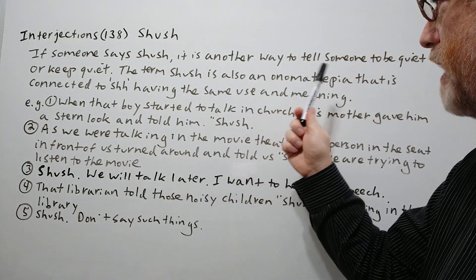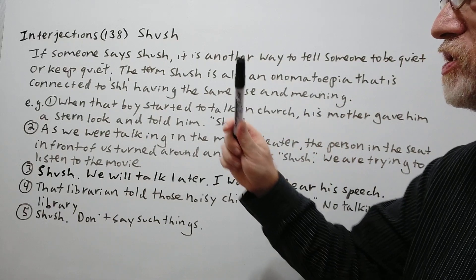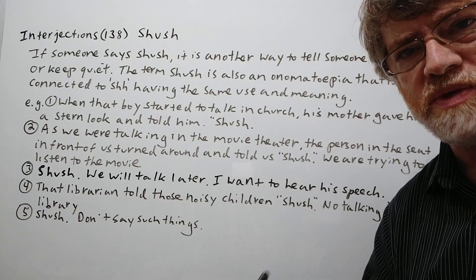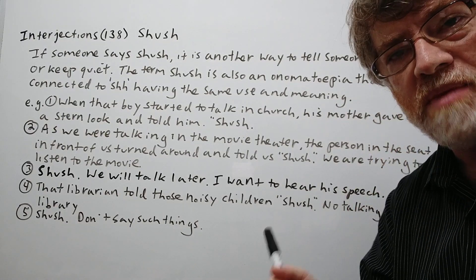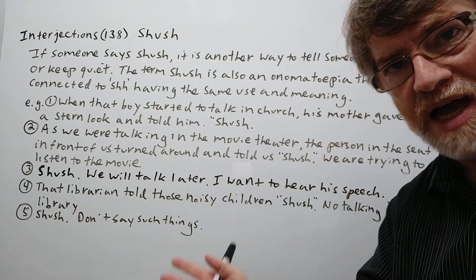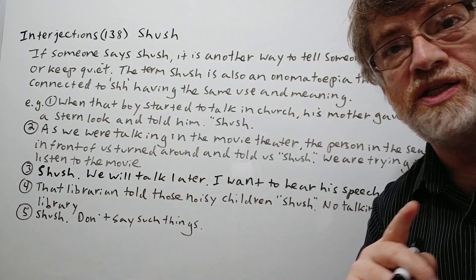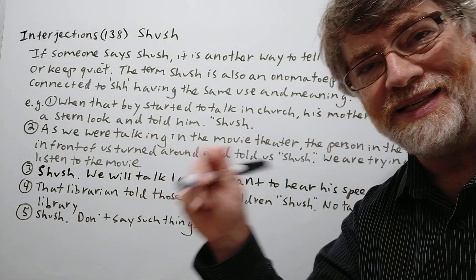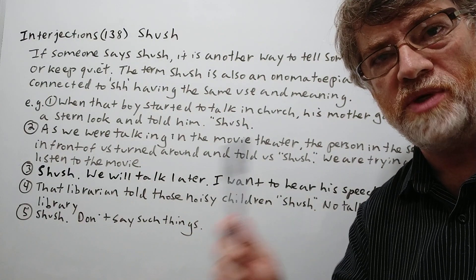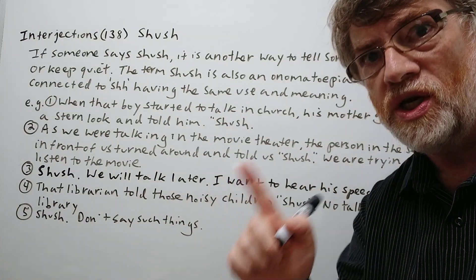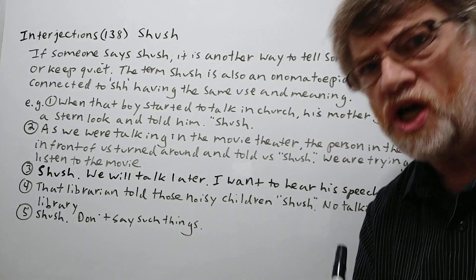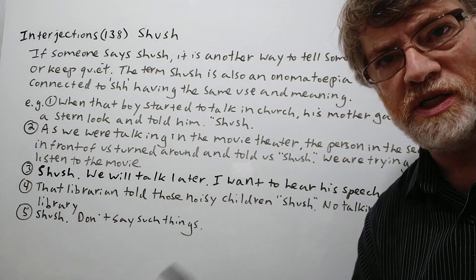The term 'shush' is an onomatopoeia connected to having the same meaning and the same use. A lot of times we tell people to be quiet, you often hear 'sh.' An onomatopoeia is when you spell out a word like the sound, so 'sh' is spelled S-H-H because it's 'sh.' If you try to put that into letters, that's what it would look like. So 'shush' is the same way — it's an onomatopoeia. When we say 'shush,' we'll probably say it like that, sometimes in half a whisper too.